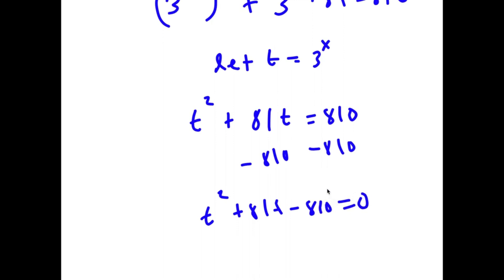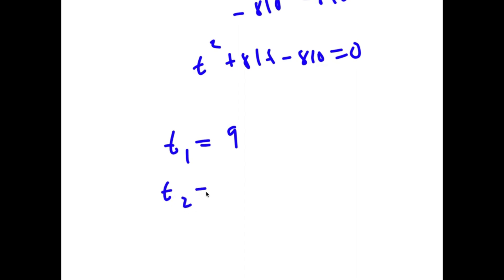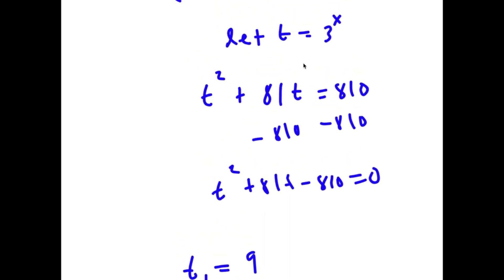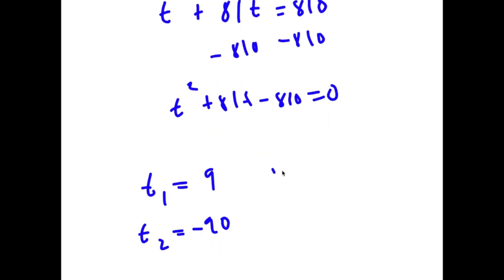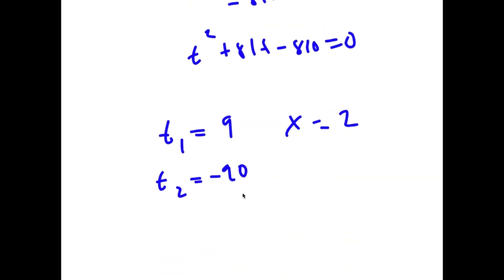To solve this, we use the quadratic formula. Using it, you should get that t equals 9 or t equals negative 90. Remember we set t equal to 3 to the power of x. So if t equals 9, then x equals 2. And if t equals negative 90, well, you can't take the power of a positive number and make it negative. So x equals 2 is my only solution.